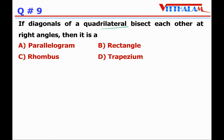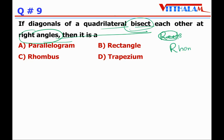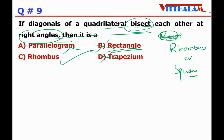Next: If the diagonals of a quadrilateral bisect each other at right angles, then it is which shape? If diagonals bisect each other AND form right angles, the figure would be either a rhombus or a square. Parallelogram may or may not qualify; trapezium — no. Rectangle — no, because its diagonals bisect each other but not at right angles. So the answer is C: rhombus or square.